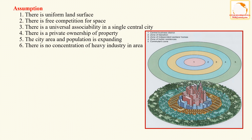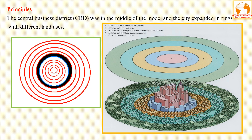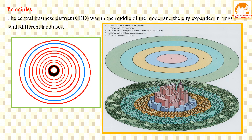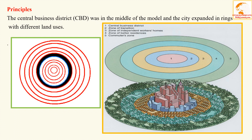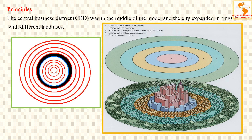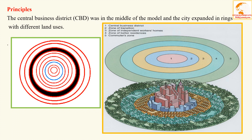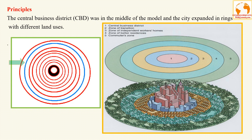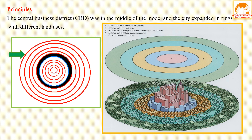Now let us see the principles. In this theory, Burgess explained that the interaction of people with their various economic, social, and political organizations creates a radial expansion outward from the center, forming a series of concentric zones. The central business district is in the middle, and the city expands in rings with different land uses.